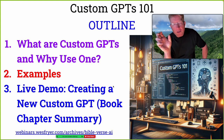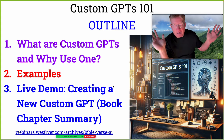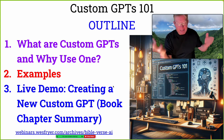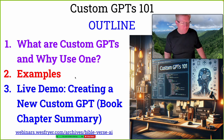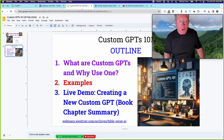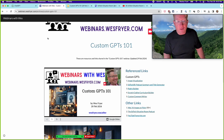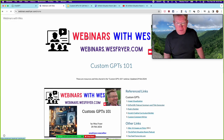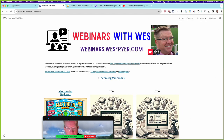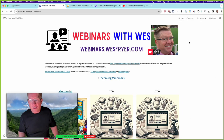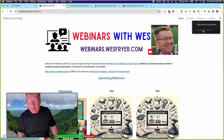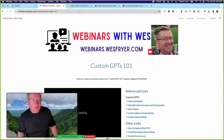What's very unique about custom GPTs is you can create a custom knowledge library that is given priority when you give your GPT a query. Instead of using its entire knowledge base of everything it has ingested, it will use the information you have put into that library. Let me show you how to get to the resource page for tonight — go to webinars.wesfryer.com, and under Archives you'll find tonight's session on custom GPTs.